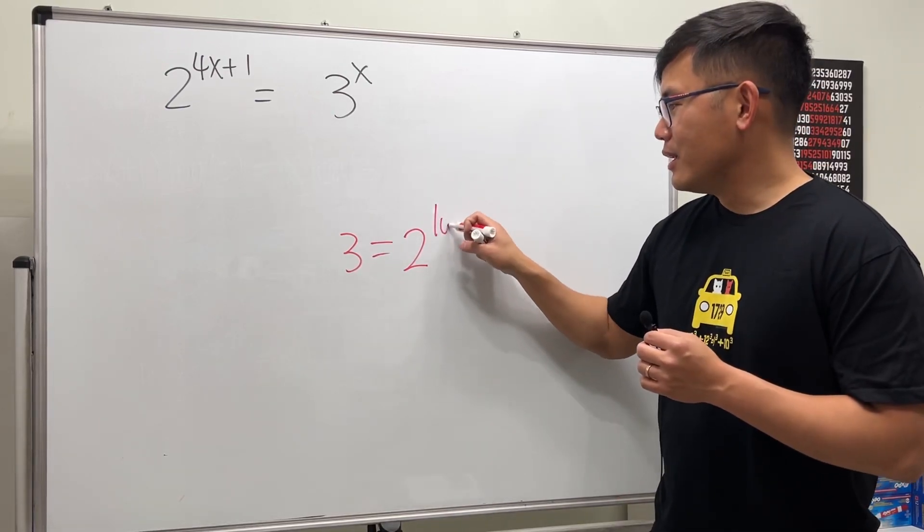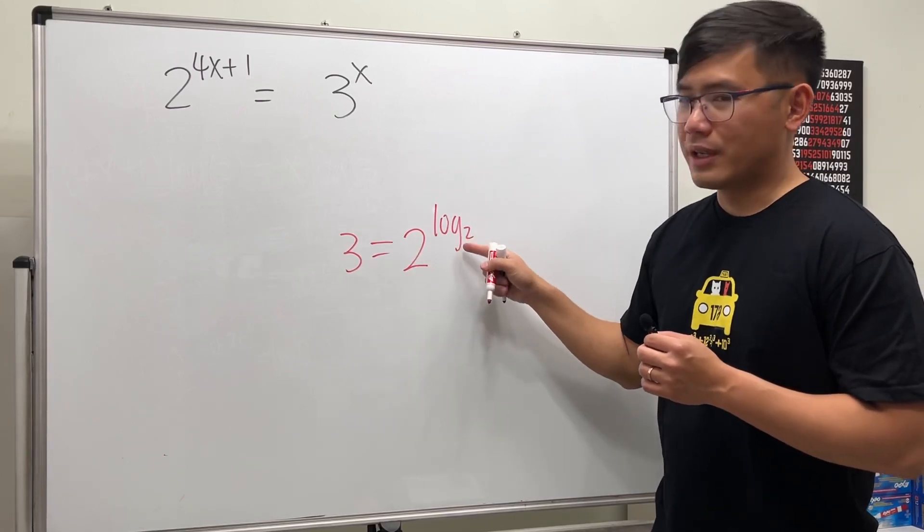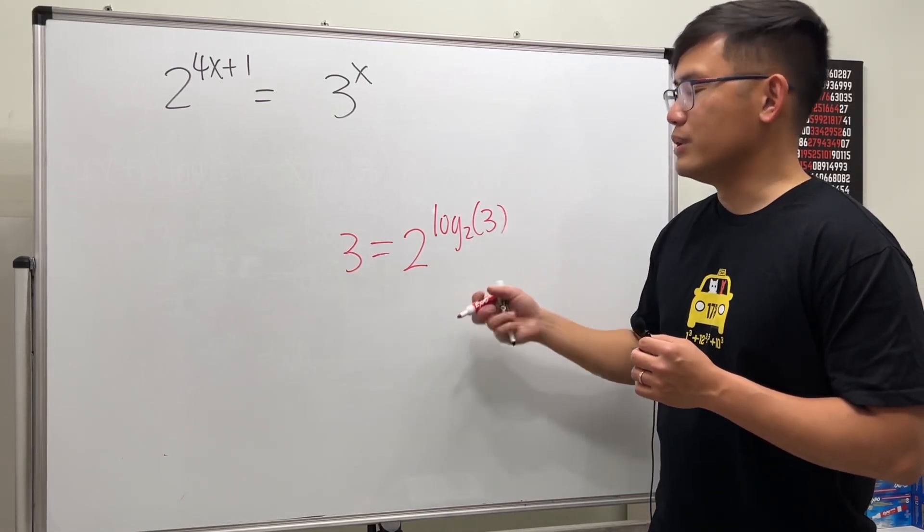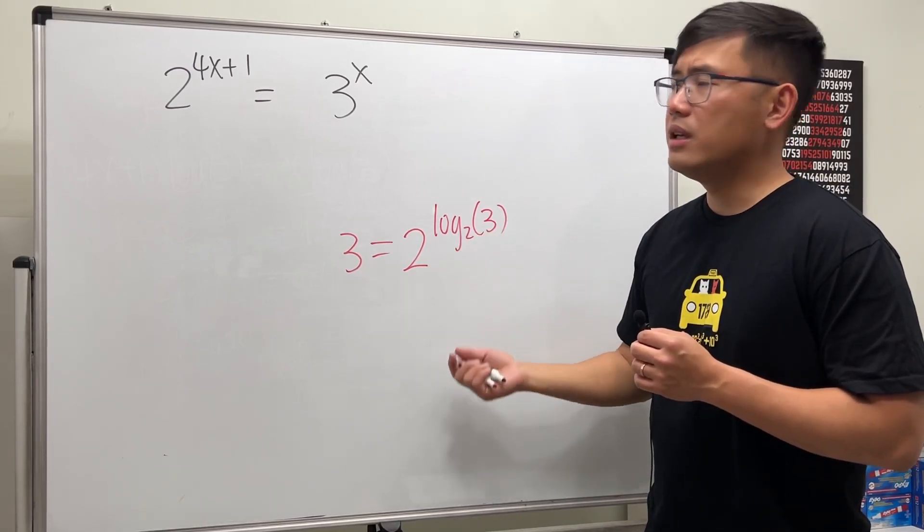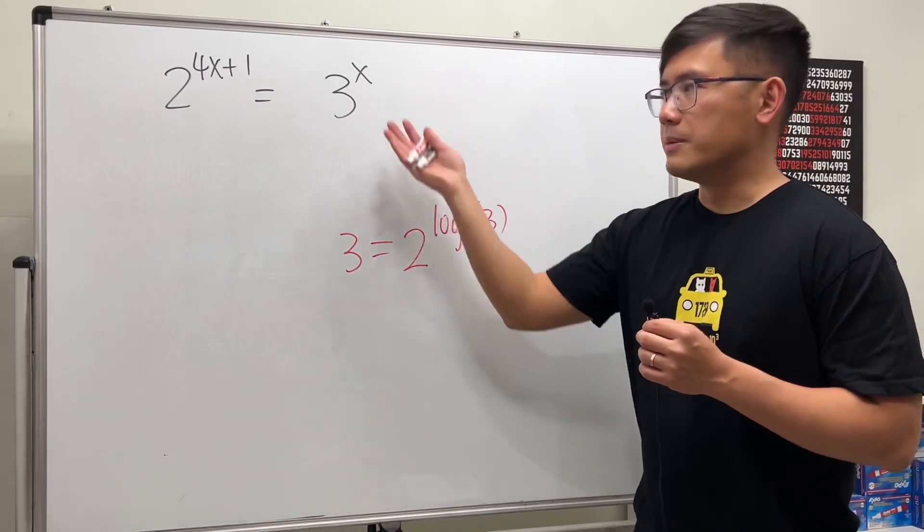What is it? Well, it's just log base 2, because this then will cancel. And if you want to get 3, then just have an input 3. But as you can see, the moment you do this, you are using logarithm already. So we might as well just use logarithms right in the beginning.